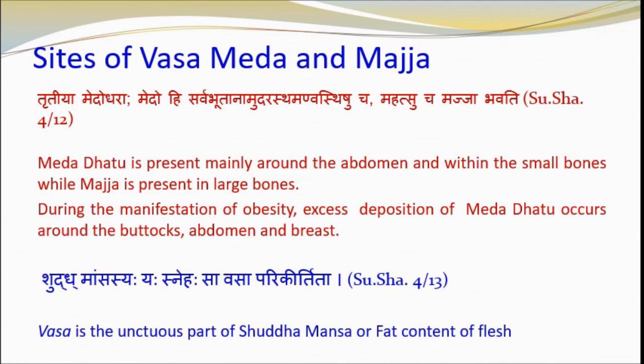Regarding the sites of Vasa, Medha and Majja — in description of Kala, Acharya Shushrut has considered the 3rd Kala as Medudhara Kala, which can be considered as omentum and deep fascia as per contemporary science. In all human beings, Medha is present in abdomen and small bones, while Majja is present in large bones. Sarakta Medha is present in small bones. During obesity, excess deposition of Medha Dhatu occurs around the buttocks, abdomen and breast.